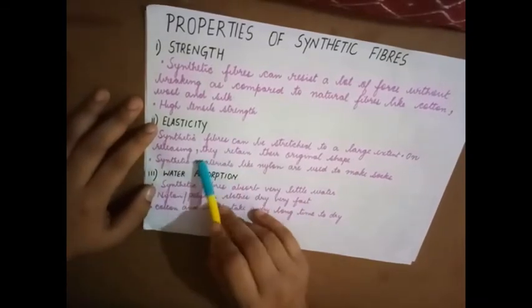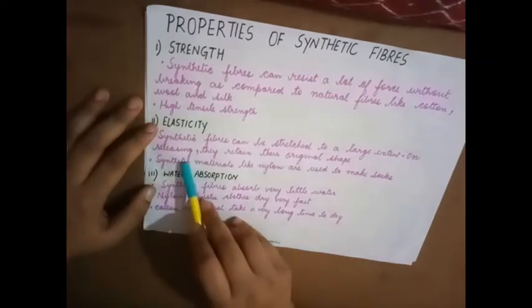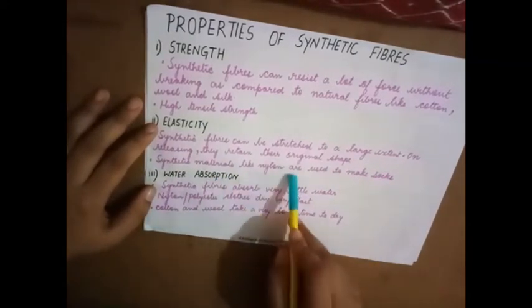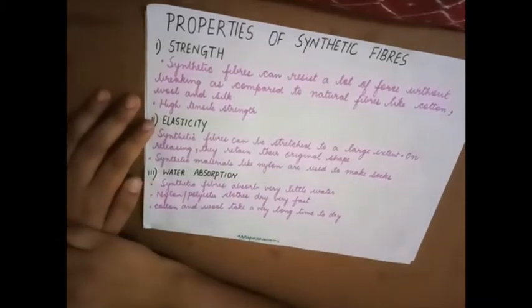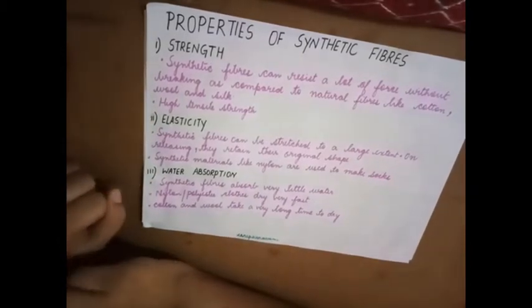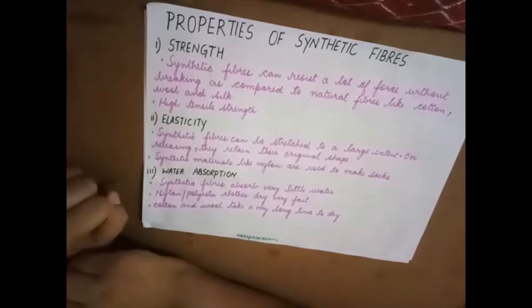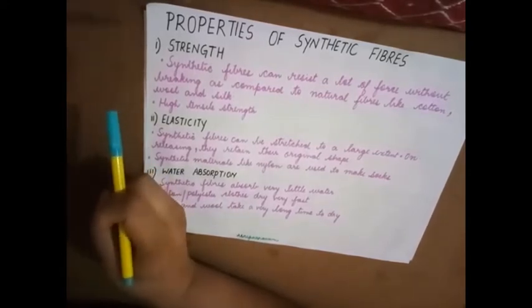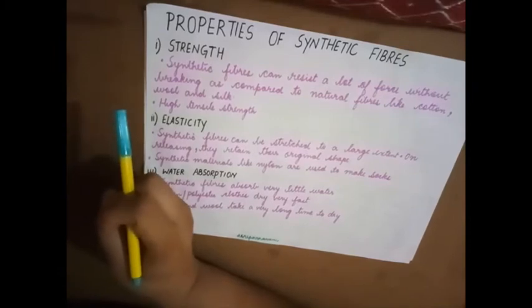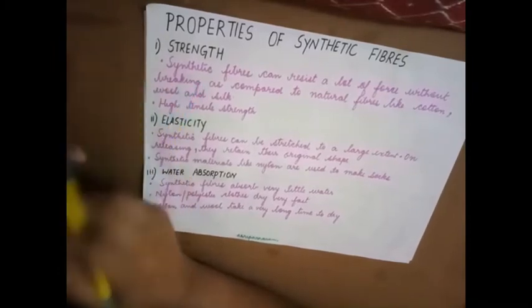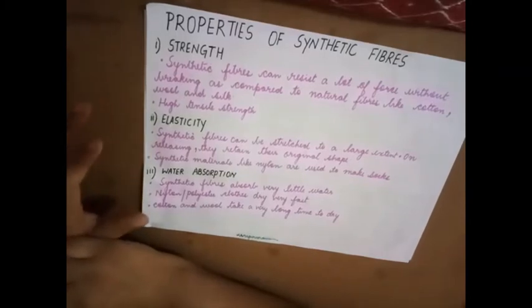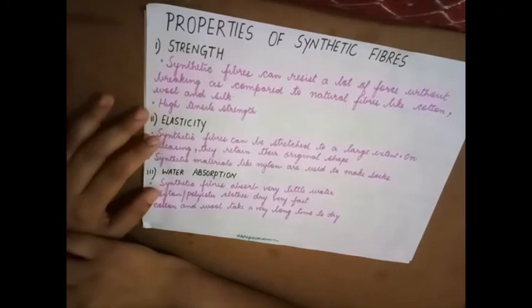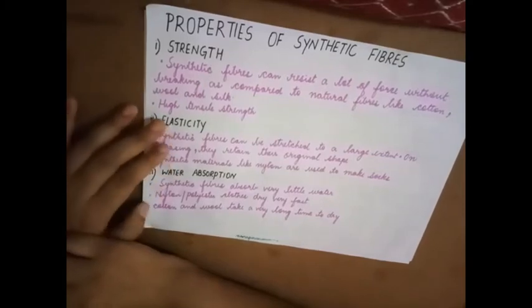Elasticity: Synthetic fibers can be stretched to a large extent. On releasing, they retain the original shape. Synthetic materials like nylon are used to make socks. Elasticity - synthetic fibers can be stretched to a very large extent. So when you stretch it, it's not that they are stuck in that same position. It regains its original shape. That's why they are used in making socks. Nylon is a synthetic fiber that is used to make socks.